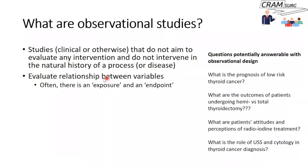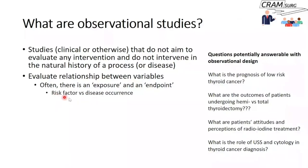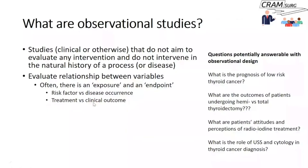Observational studies essentially evaluate the relationship between different variables. In most observational studies there is a variable called exposure and another called an endpoint. In some studies we're looking at a risk factor and the occurrence of disease — for example, tobacco smoking and lung cancer, where smoking is the exposure and lung cancer is the endpoint. In other observational studies, you have treatments and want to evaluate their relationship with outcomes such as survival or recurrence, where the treatment is the exposure and the clinical outcome is the endpoint.